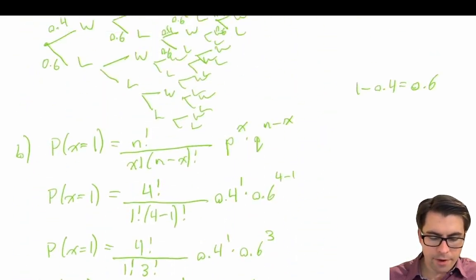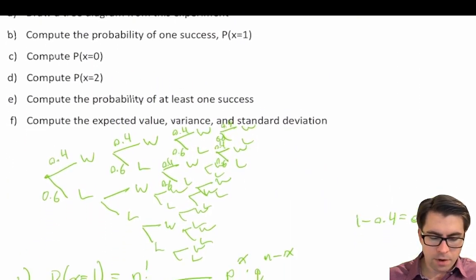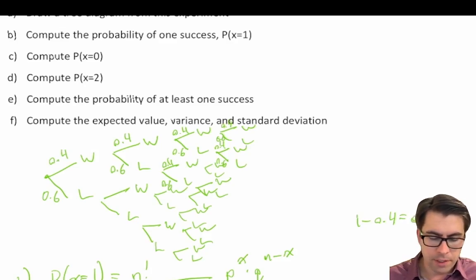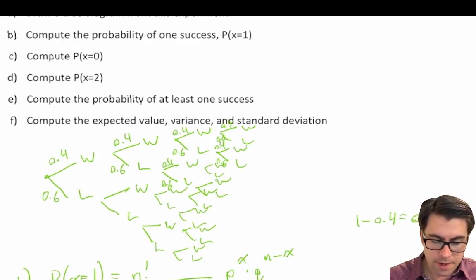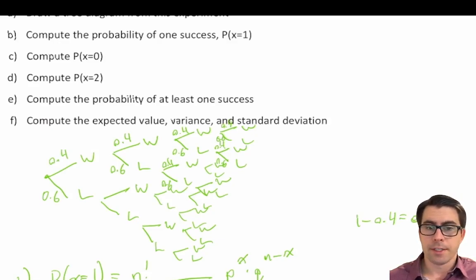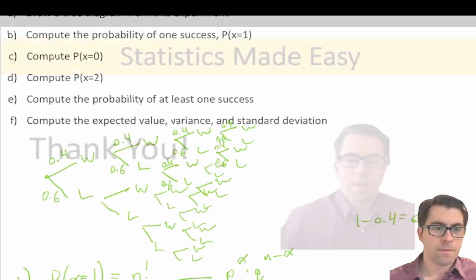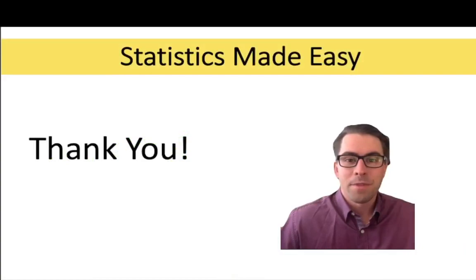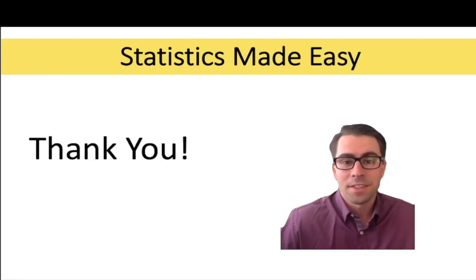And there we have it — we've completed the question. We drew the decision tree, computed the probability of exactly one success, no successes, two successes, at least one success, as well as the variance, standard deviation, and expected value. That's it for this video. If you found it helped make statistics easy, consider giving the video a like and subscribing to the channel.